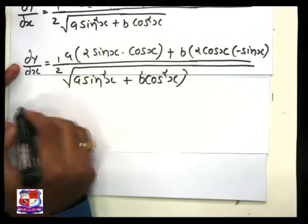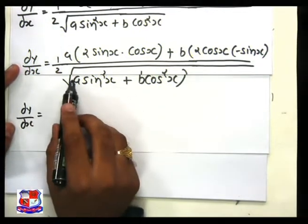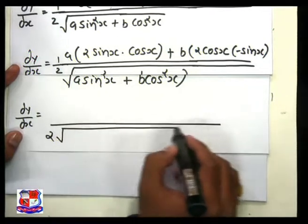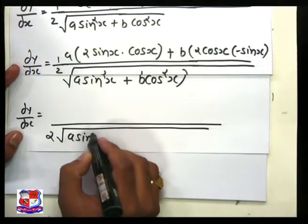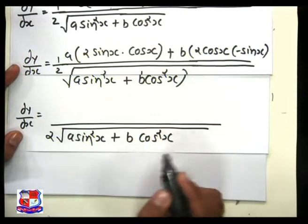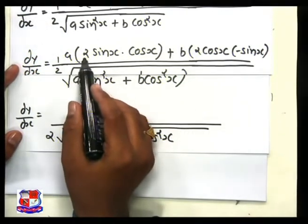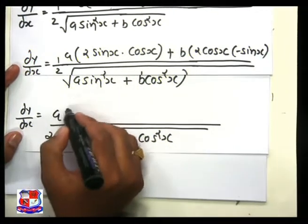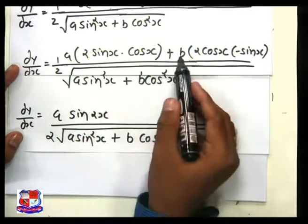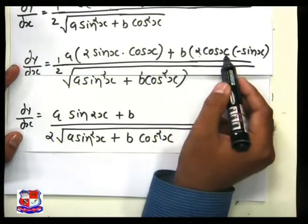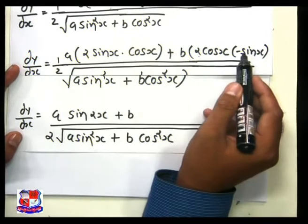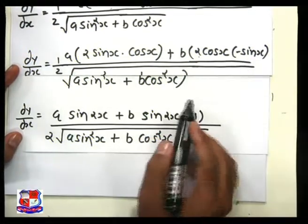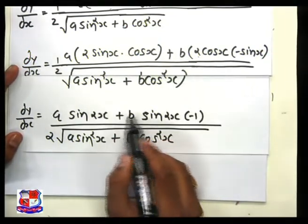Simplifying the numerator: dy/dx equals, with denominator 2√(a·sin²x + b·cos²x), the numerator has A·2·sin x·cos x which equals A·sin 2x, plus B times 2·cos x·(minus sin x) which equals minus B·sin 2x. So the numerator becomes A·sin 2x minus B·sin 2x.